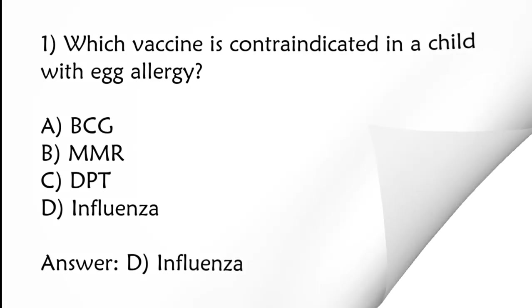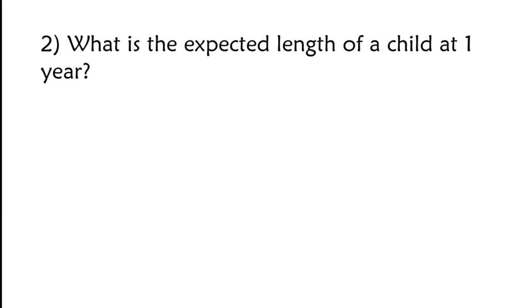Which vaccine is contraindicated in a child with egg allergy? BCG, MMR, DPT, influenza. Correct answer is option D, influenza. What is the expected length of a child at one year? 50 centimeters, 60 centimeters,